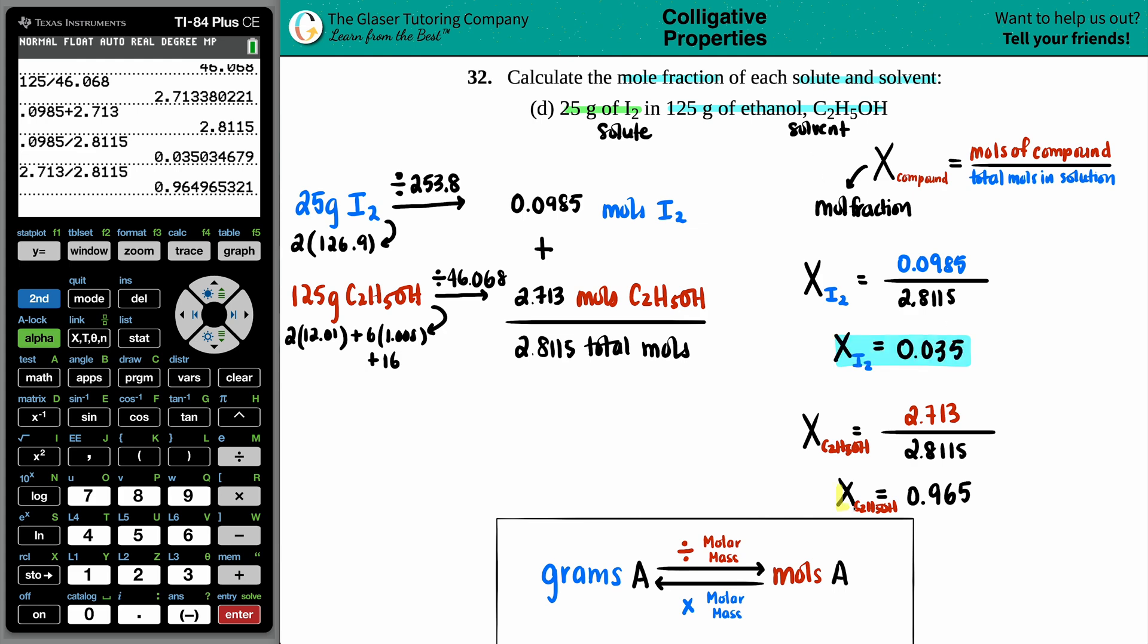Now, if we did this correctly, what we should be able to do is add these two numbers up. And your answer should be very close to 1. Because if you add all your components up in fractions, the total fraction is always going to equal 1. And there it is.